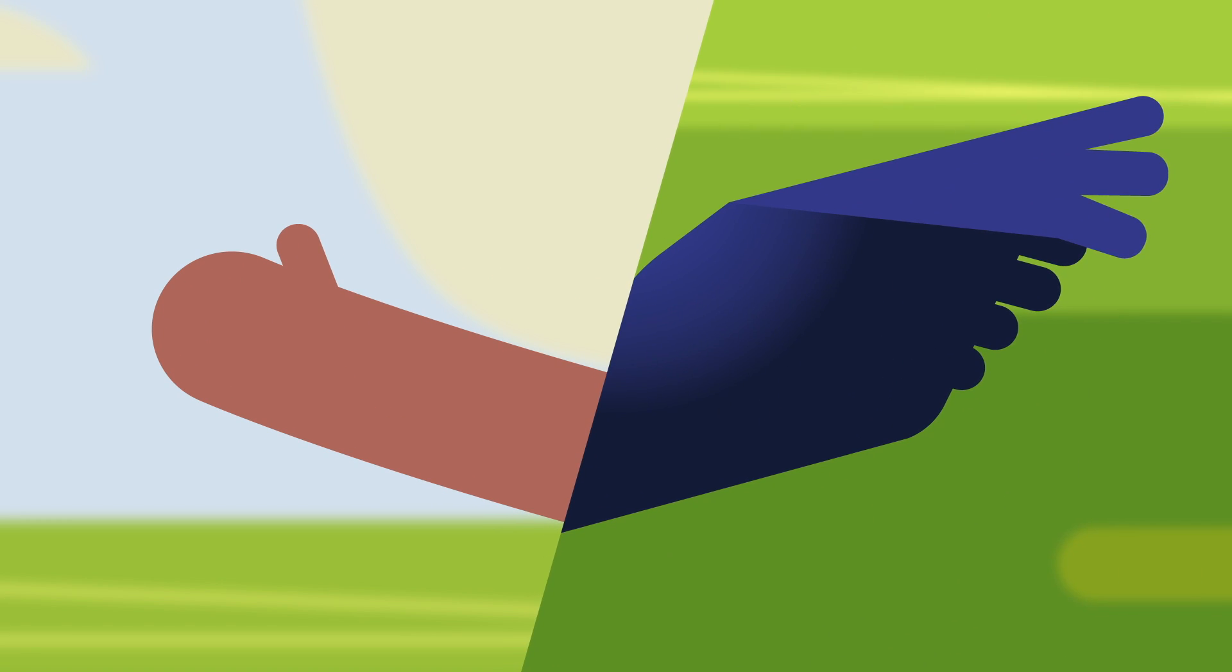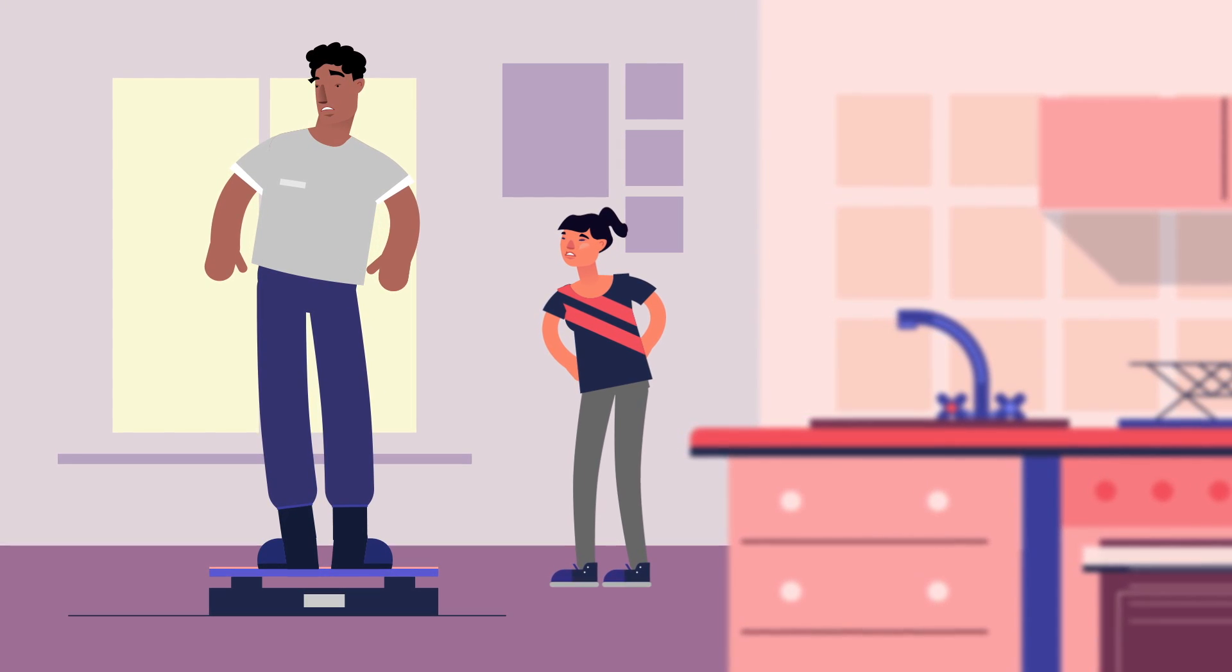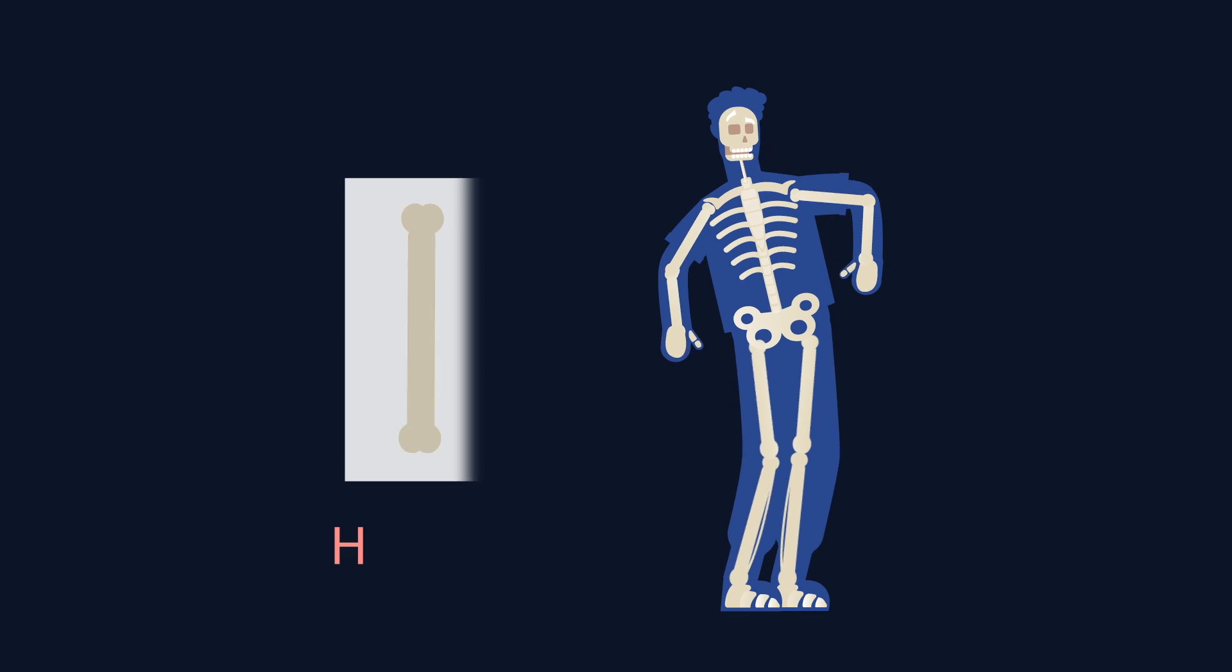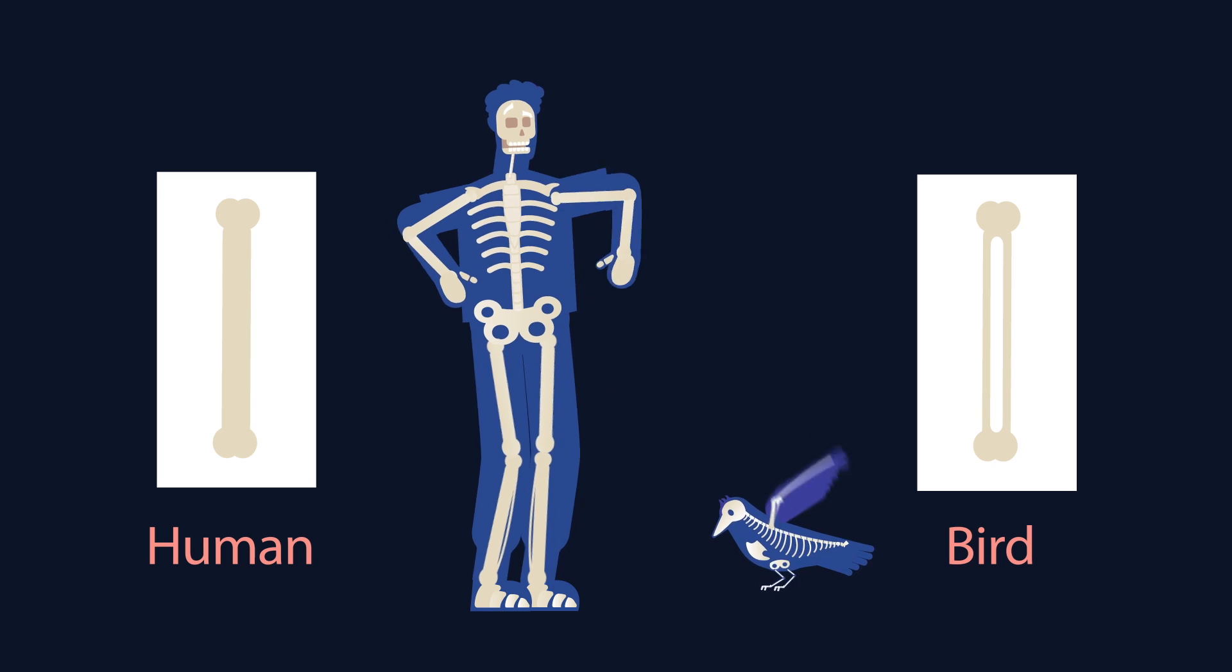Our arms have a different shape, but even if we had wings like that, we still couldn't fly. That's because of difference number two: we are too heavy. Our bones are solid and birds' bones are hollow. It makes them super light.